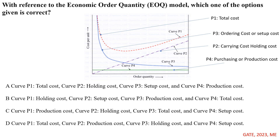To summarize: curve P1 is the total cost, curve P2 is the holding cost, curve P3 is the ordering or setup cost, and curve P4 is the purchasing or production cost. Checking the options, option A matches this — option A is the correct one.